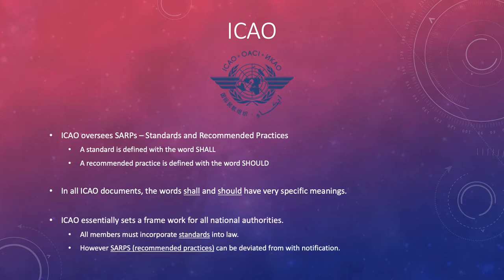ICAO sets the framework for all national authorities. Different countries have their own national aviation authority but they all revert back to ICAO as the standard. All members must incorporate the ICAO standards into their own law. Recommended practices can be deviated from with notification — if a member state doesn't want to comply with a recommended practice, they can do so, but they must notify ICAO and provide a reason why.